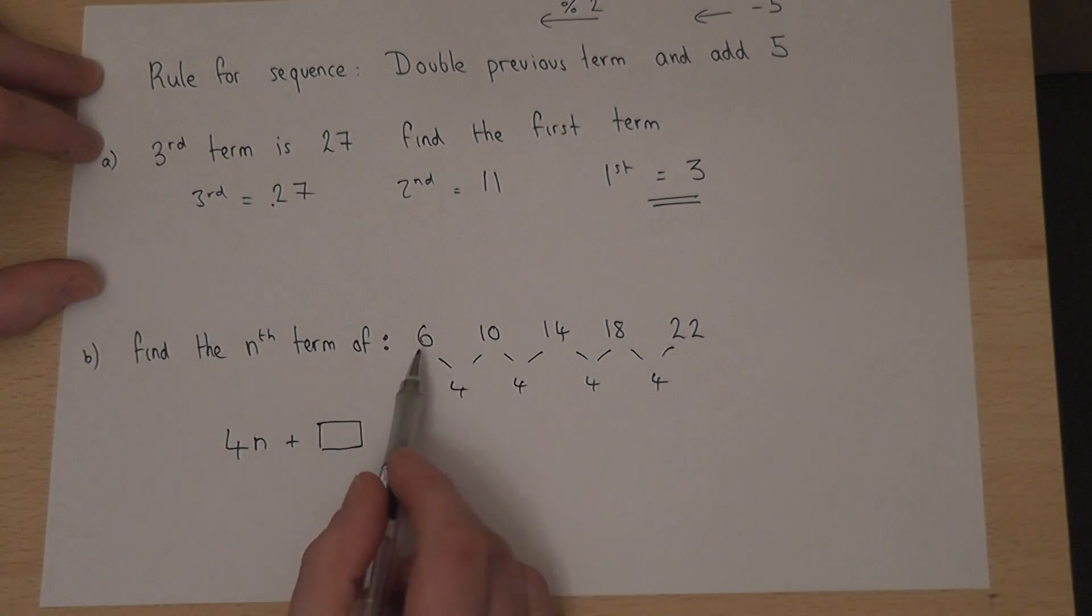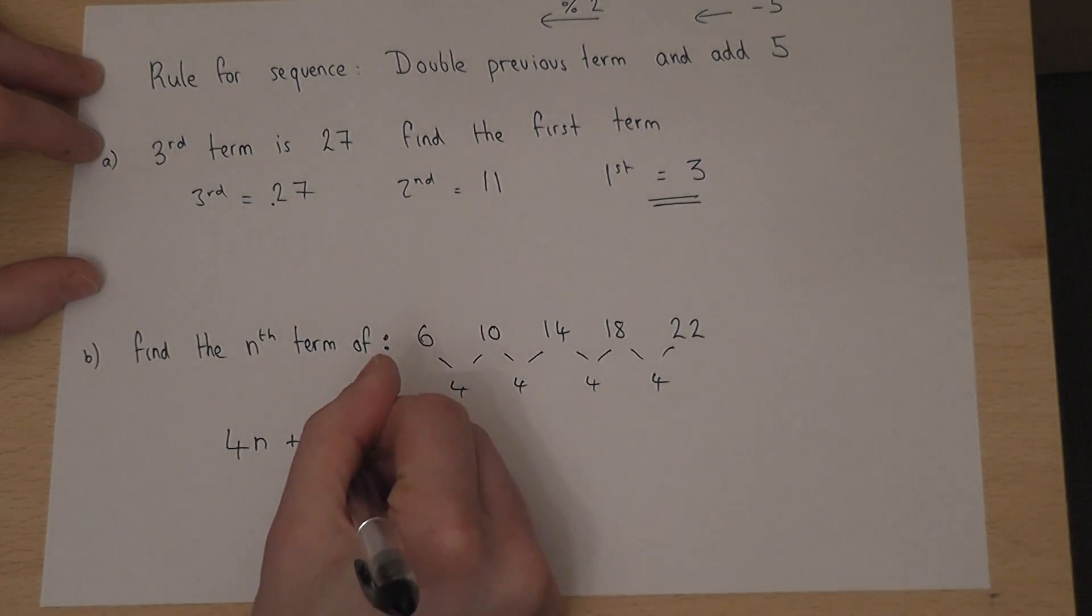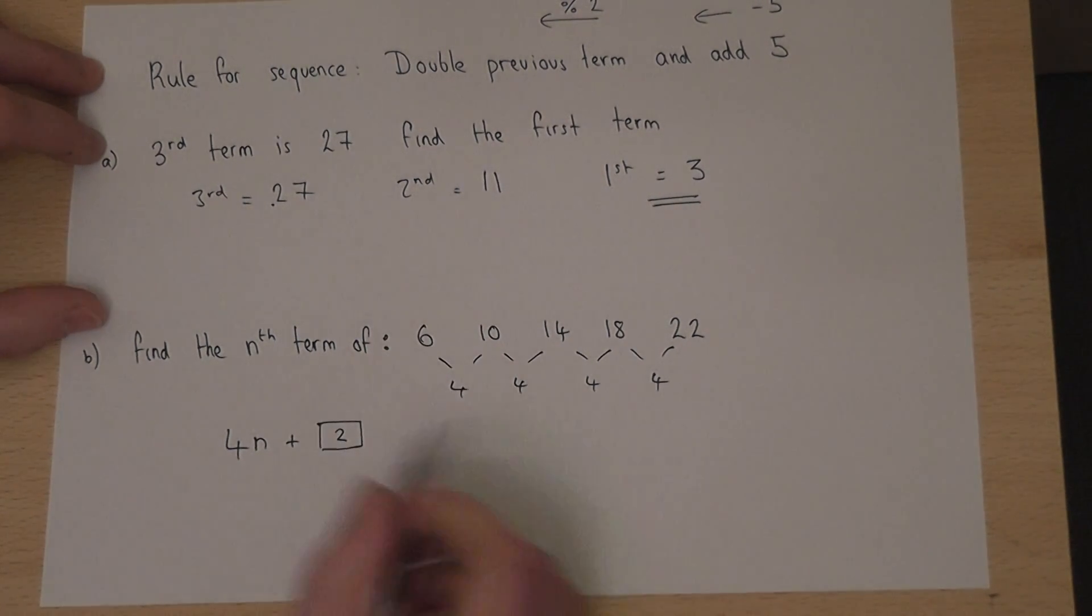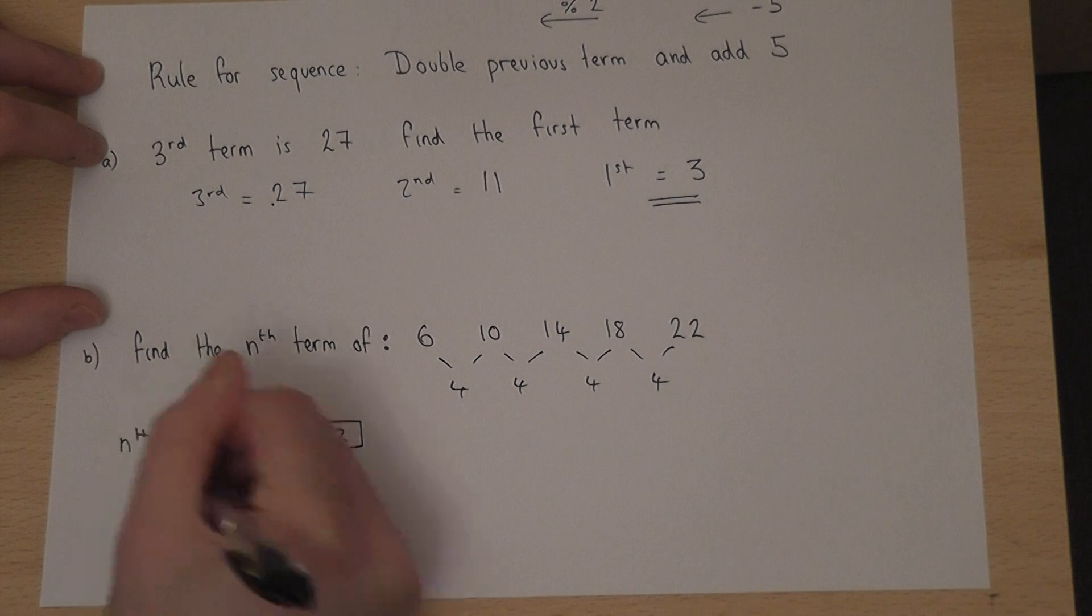The first term is 6. How do you get from 4 to 6? Well, 4 plus 2 equals 6. And this, therefore, gives the nth term of the sequence.